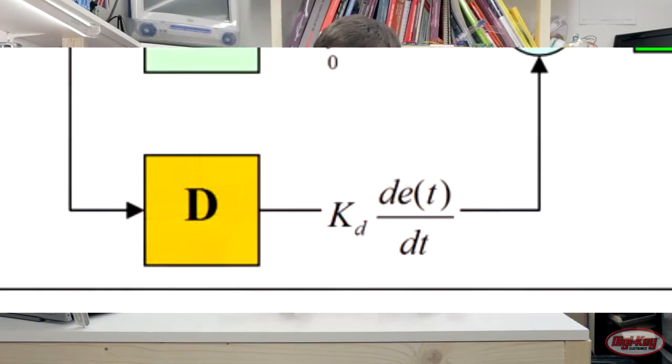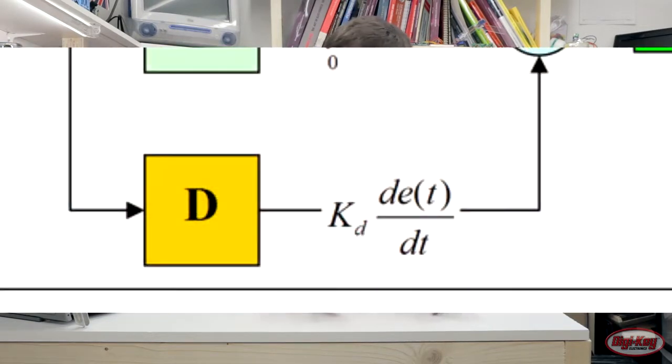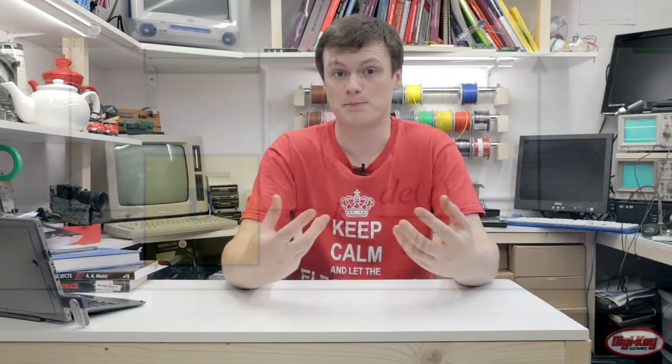The last block of the PID controller is the differential block, which tries to predict where the error is going to be. By differentiating the error, you are essentially getting the gradient of the error — how much that error is changing per second. So by differentiating that signal, it can say that in a few seconds' time, you're going to be three or five miles out.